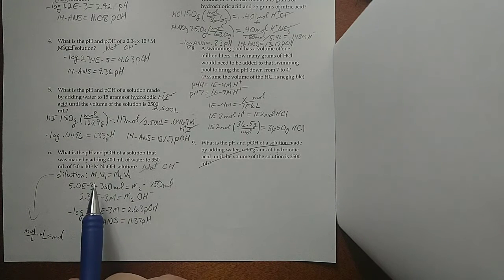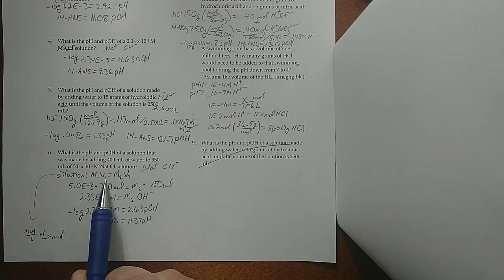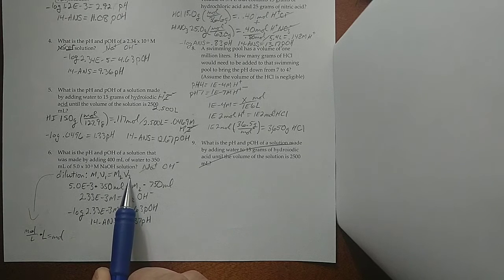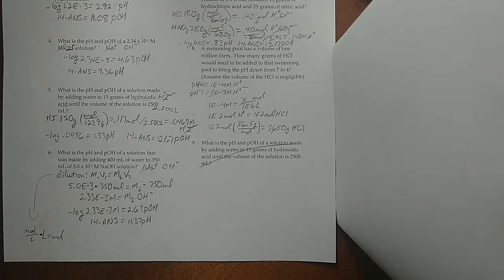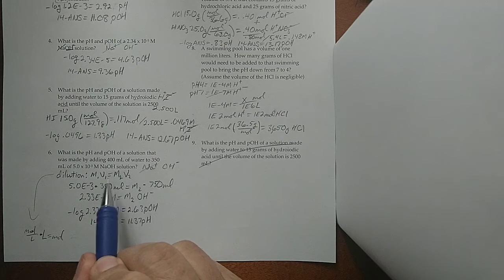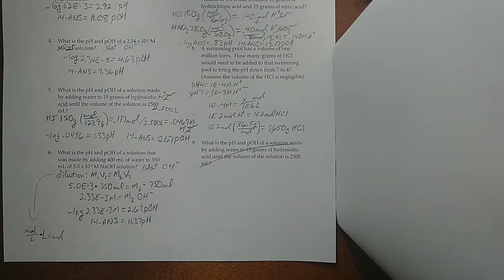So, here's our dilution formula. M of the first time times volume of the first time is equal to molarity of the second time times volume of the second time. Because again, all we're saying is that the moles at the beginning of the thing dissolved equals the moles at the end that are dissolved.